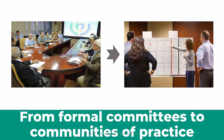Formal committees and communities of practice play the same type of role in an organization. They are both made of delegates who collaborate in a transversal way. People from similar functions but situated in different parts of the organization are collected to help make decisions on certain issues or serve certain purposes.